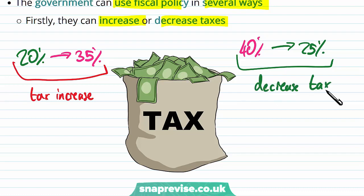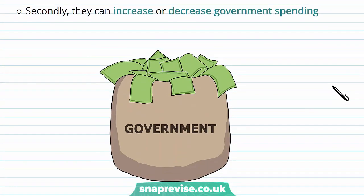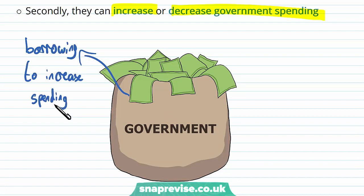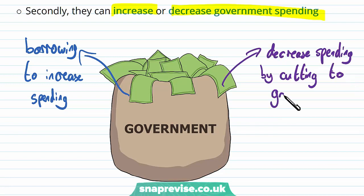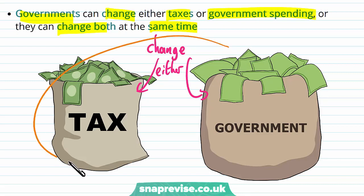One other way that the government can use taxes is through the introduction of new taxes. It's certainly not very common, but a new tax example is how the government introduced a 5p tax on plastic bags, which is an example of a new tax to affect aggregate demand. The other way they can use fiscal policy is through increasing or decreasing government spending. If they increase government spending, they might end up borrowing more. Or the government may choose to decrease government spending by cutting funding to government services such as healthcare and education. Governments can also change either their taxes or government spending, or they can change both at the same time.